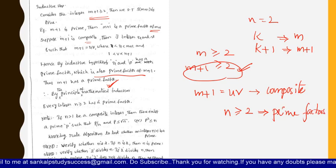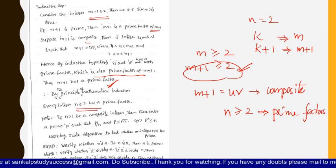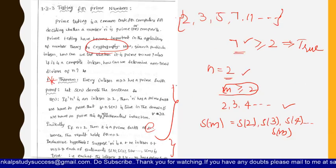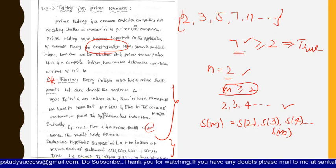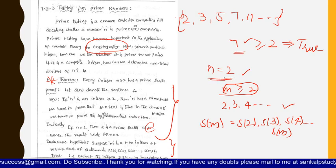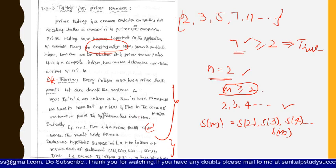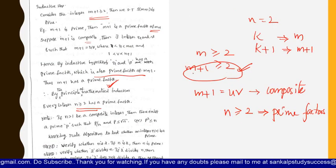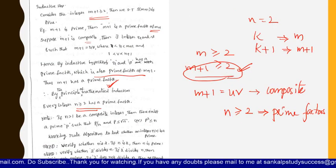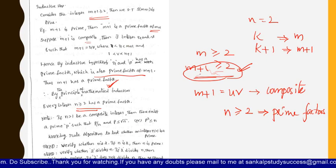This theorem states that any number greater than or equal to 2 will have a prime factor. We prove it using mathematical induction: initially considering n equals 2, then n greater than or equal to 2, and then n plus 1 greater than or equal to 2.